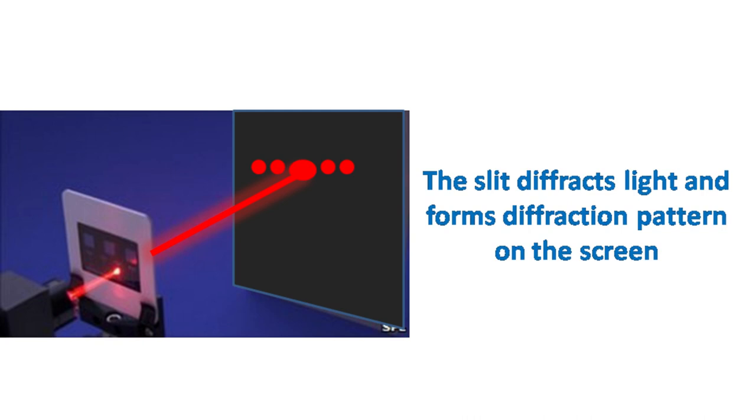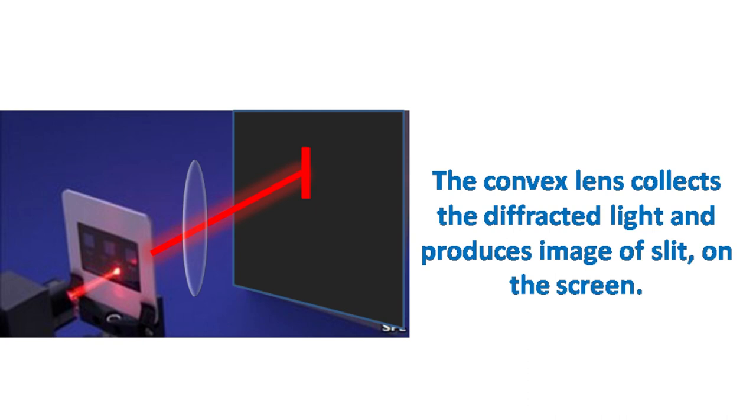So what's happening here? Let's see. The slit diffracts the light, the diffracted light is collected by the convex lens, and the lens focuses the diffracted light on one point, resulting in an interference pattern which ultimately forms an image.